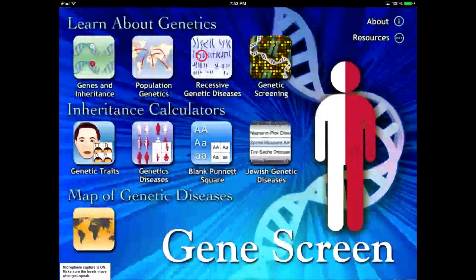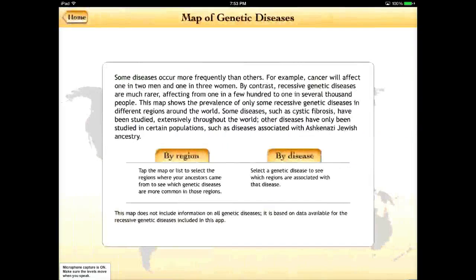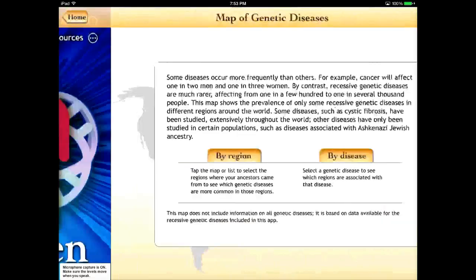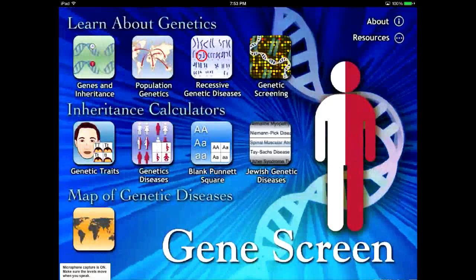Going back to the home button, there's also a map of genetic diseases, where you can see different diseases that tend to happen either by region or by area. It's a very simple app, but it can really make genetic concepts a little bit easier as you're introducing the subject.